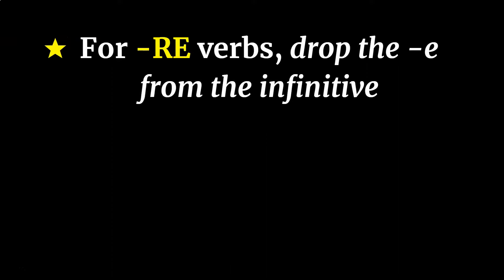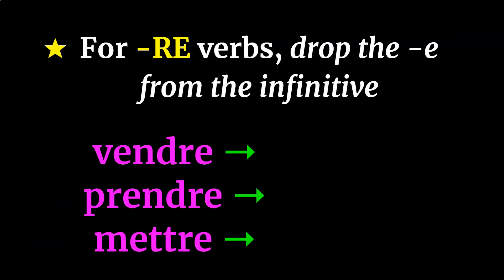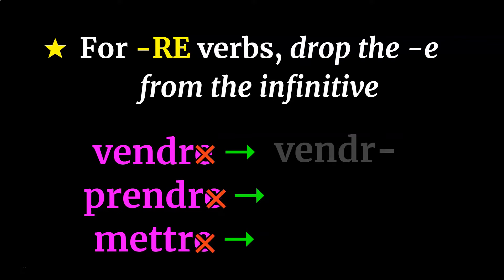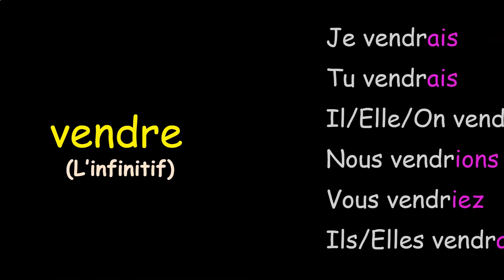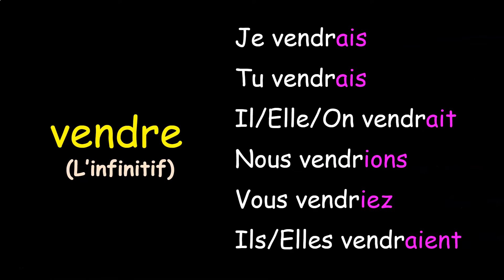For -RE verbs such as vendre, prendre, and mettre, it's essentially the same process except for one adjustment: drop the -E from the infinitive stem. Once you drop the E, your stem is good to go. So vendre would be: je vendrais, tu vendrais, il/elle/on vendrait, nous vendrions, vous vendriez, and ils/elles vendraient.